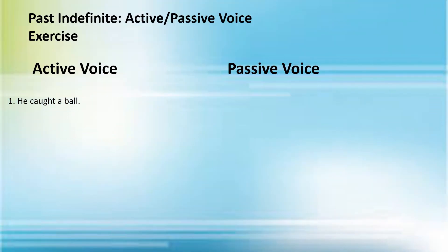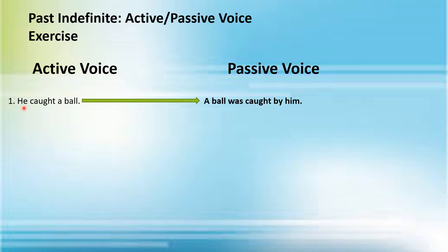This exercise will help you to have more grip on the topic. See the first sentence: 'He caught a ball.' You can see that 'a ball' is the object. When we convert it into passive voice, 'a ball' will come at the start of the sentence. 'Caught' shows this is the affirmative sentence of past indefinite tense because it's the second form of the verb. We add 'was' as the helping word, and 'he' — the subject — comes at the end as 'him'. The passive voice is: 'A ball was caught by him.'